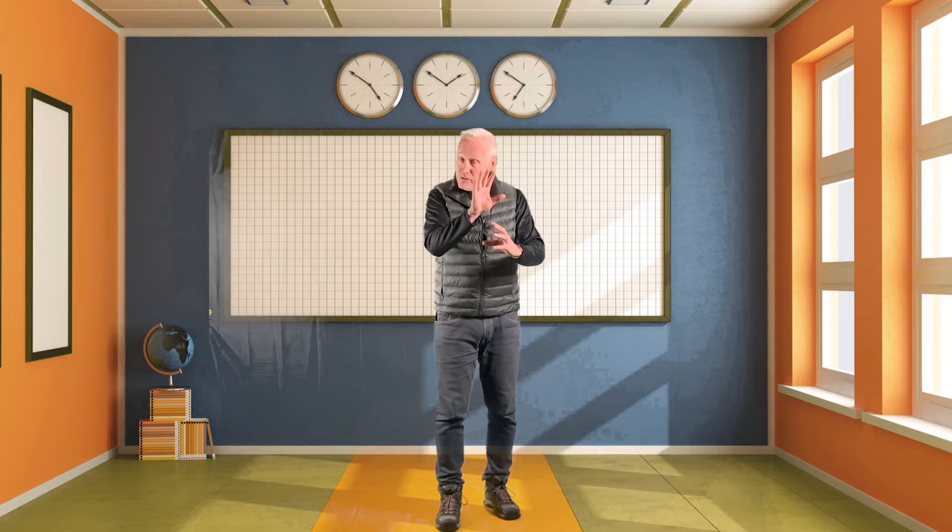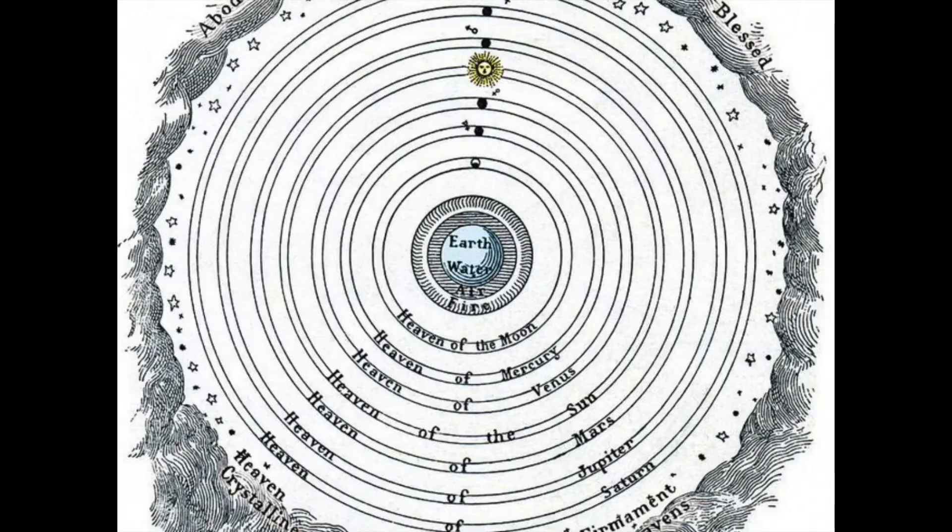However, what he formulated through this book was an explanation for the wandering stars, the planets, and here's how he did it. Here's Earth in the middle of it all. The planets, the sun, the moon, the stars are all fixed upon a crystal ball. Picture a crystal ball around the Earth.